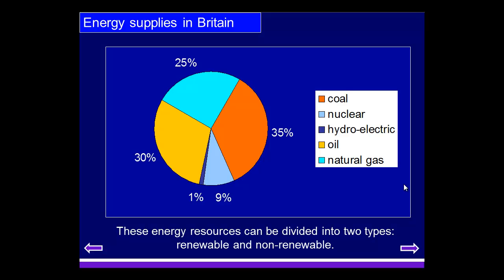Just to emphasize this point, if we think about energy supplies in Britain, what we can see by looking at this pie chart is that coal, nuclear, oil, and natural gas usage makes up the majority of energy supplies in the United Kingdom today, with a very small percentage of hydroelectric, which could be considered a renewable source of energy.